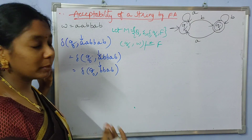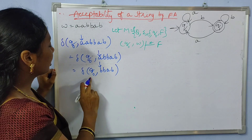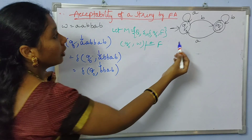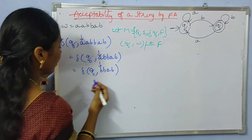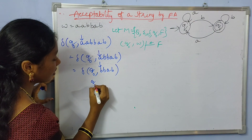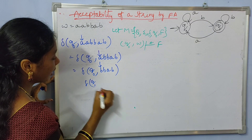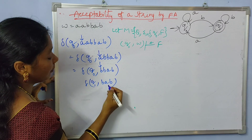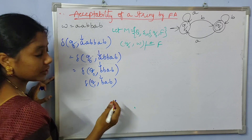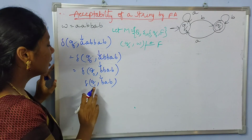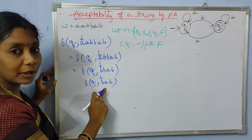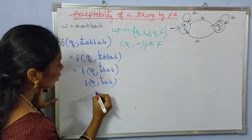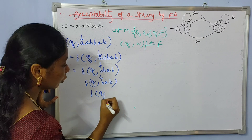We are at q0 and we need a transition with input 'b'. From q0 with input 'b', we go to q1. Now we are at q1, and the next input string is b a b. From q1 with input 'b', we go to q1 again.